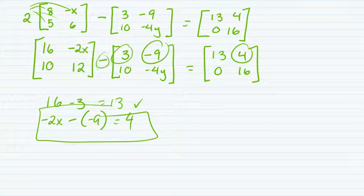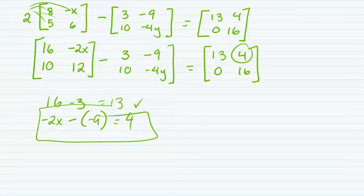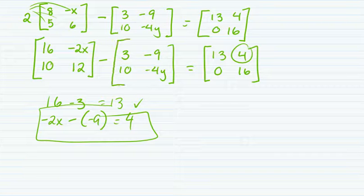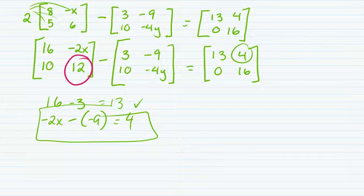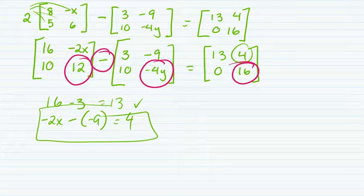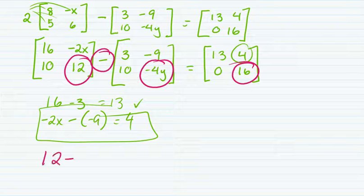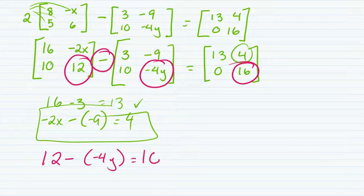And then I'm just going to go ahead and skip straight ahead and see if I can set up my y. So I'm going to be dealing with my bottom right. I'm going to get 12 minus negative 4y, equals 16.